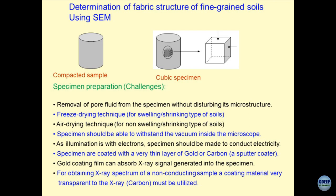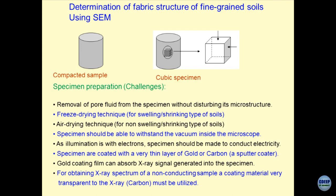It is a very difficult task to cut out a 1 centimeter cube sample from a triaxial sample. There are different techniques of preserving the samples — if you take a clay mineral in saturated or wet form and expose it to air, it will crack. This is where we use techniques like lyophilization — we put the entire thing into liquid nitrogen, dry-freeze it, remove the water by sublimation, and whatever structure of the soil particles remains can be utilized to study its fabric. Preparation of samples is a big challenge: you must remove the pore fluid without changing the microstructure.